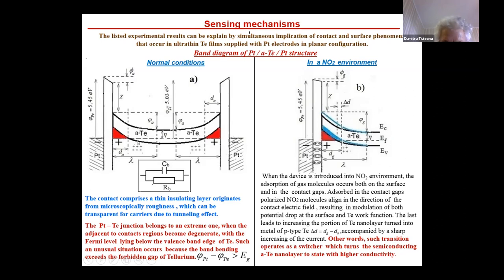The platinum tellurium junction belongs to one where the adjacent two contacts region become degenerate with the Fermi level lying below the valence band of tellurium. Such unusual situation occurs because the band bending exceeds the forbidden gap of tellurium.